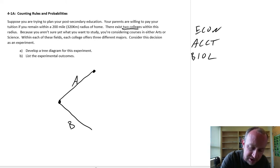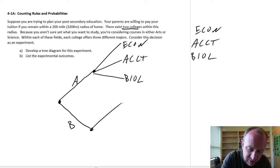So if I go to college A, well now I can choose between these three majors: Econ, accounting, or biology. Or if I go here, I can choose between those same three majors: Econ, accounting, and biology.